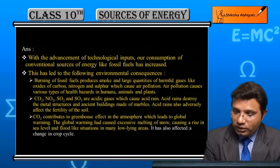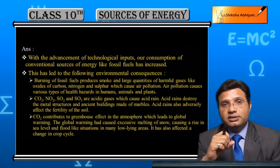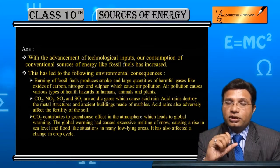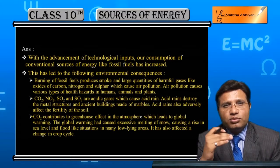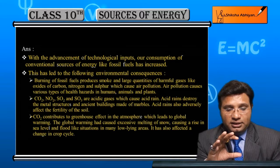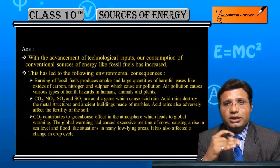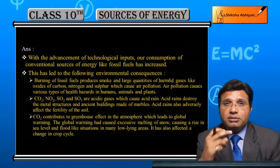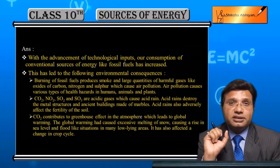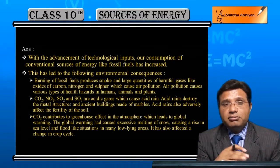Global warming has also caused a change in the crop cycle. The crop cycle — which determines what crops grow in which season — has been disturbed. Sometimes a season that should last three months extends to five months, disrupting the crop cycle. These situations arise from our environment and are mainly because of fossil fuels.